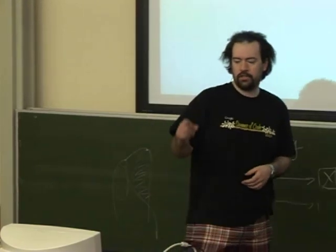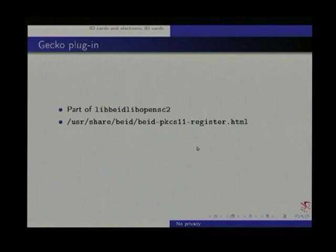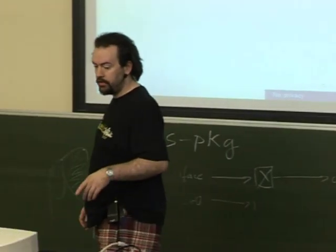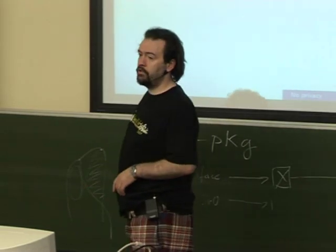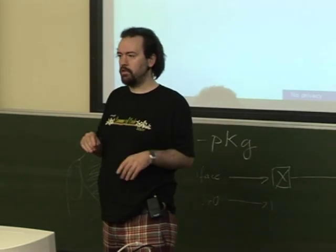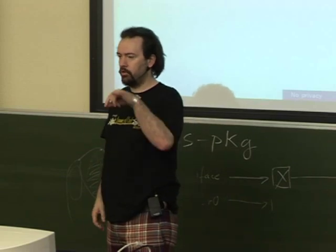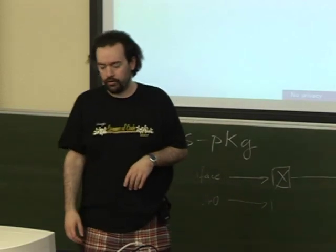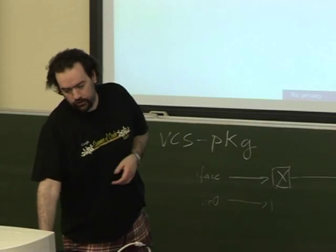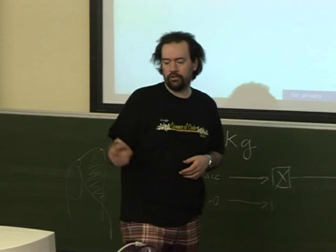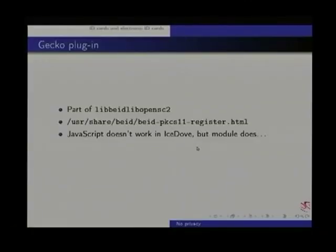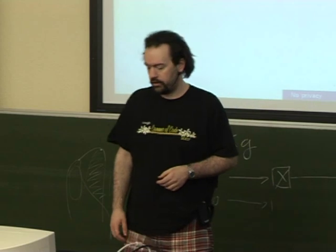There's a gecko plugin which is part of the LibOpenSC package — it doubles as a plugin. It has just the library and also the plugin bits. If you open that file in your browser, it will run some JavaScript and enable the plugin. You get a warning of course — it doesn't do this without your noticing. And once you've done that, you can actually access the card. The module, the library, can also be loaded in Thunderbird, so you can sign emails with the card.